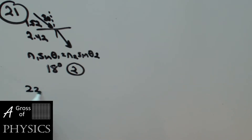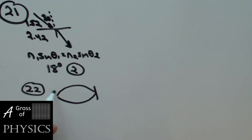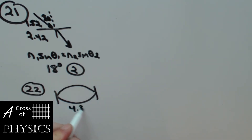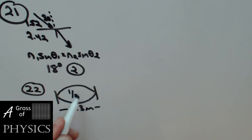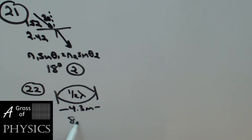Number 22: we have a group of people playing double dutch with a 4.3 meter distance between them. This is half a wavelength, and it asks for the full wavelength. So we double it: 8.6 meters. That's choice four.